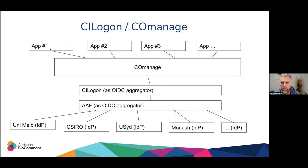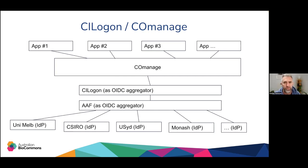In terms of where this fits: at the bottom we have identity providers — the login screens at University of Melbourne, CSIRO, University of Sydney, or Monash, called IDPs. We then have an aggregator, the AAF, which ensures all identity providers stay connected with a common set of policies. We then add CI Logon as an aggregator, and above it a product called CoManage that helps us manage communities. On top of CoManage are applications — web portals, Confluence and Jira sites, data sharing endpoints, anything that involves a login and an identity.